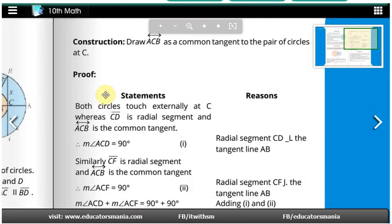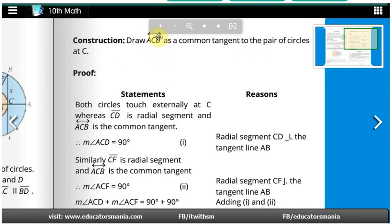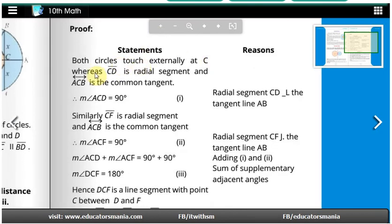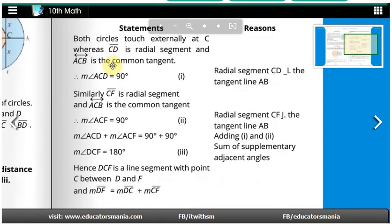In the proof, both circles touch at point C, and ACB is the common tangent to both circles.